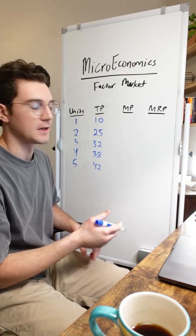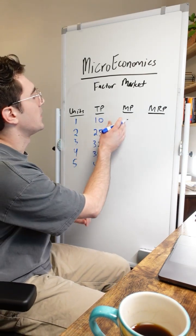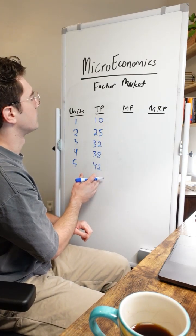I'm admittedly pulling these numbers out of thin air. They don't really matter that much. What matters here is calculating marginal product based off of total product.